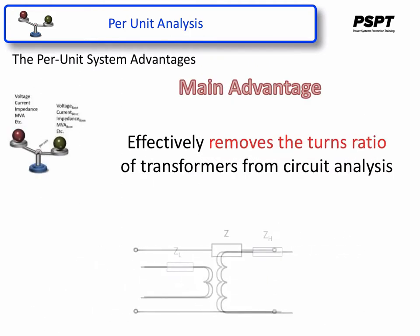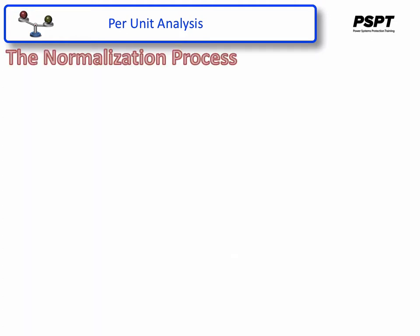The main advantage of the per unit system is it effectively removes the turns ratio of the transformers in the systems being analyzed. The normalization process has five steps — some people refer to them as rules. There are four steps going into the per unit system and then one step that takes you back out into the regular system.